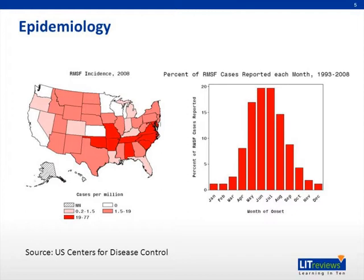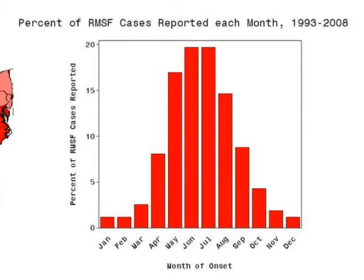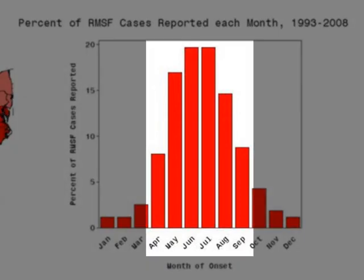Please note, too, on the graph on the right, there is a bell-shaped temporal distribution of reported cases centered around the warmest summer months. This corresponds to the life cycle of the natural vector in Rocky Mountain Spotted Fever, which we will discuss later. In fact, 95% of all cases of RMSF are reported between April and September.